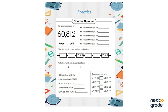Let's start. The first part of the worksheet tells us that we have to identify whether the number 60,812 is an odd number or an even number. To remind ourselves: even numbers are 2, 4, 6, 8, 10, 12, and so on. Odd numbers are 1, 3, 5, 7, 9, 11, and so on.